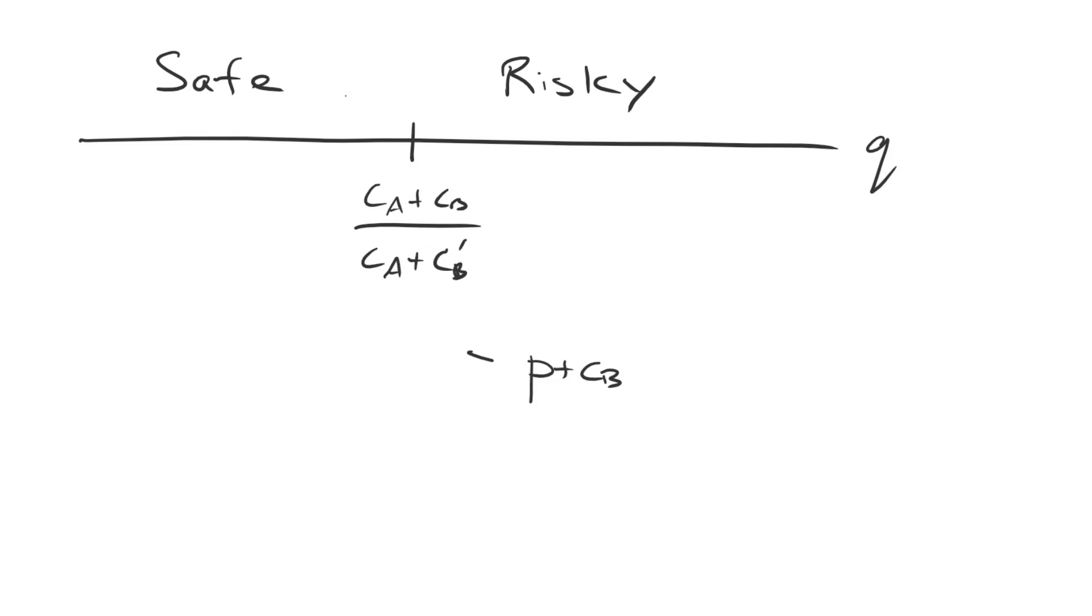And it prefers the risky amount if instead Q, the probability that B is the high cost type, times A's payoff for making that risky demand of P plus CB prime, plus one minus Q, the probability of B being the low cost type, times A's war payoff, P minus CA. This is how we derive this cut point.